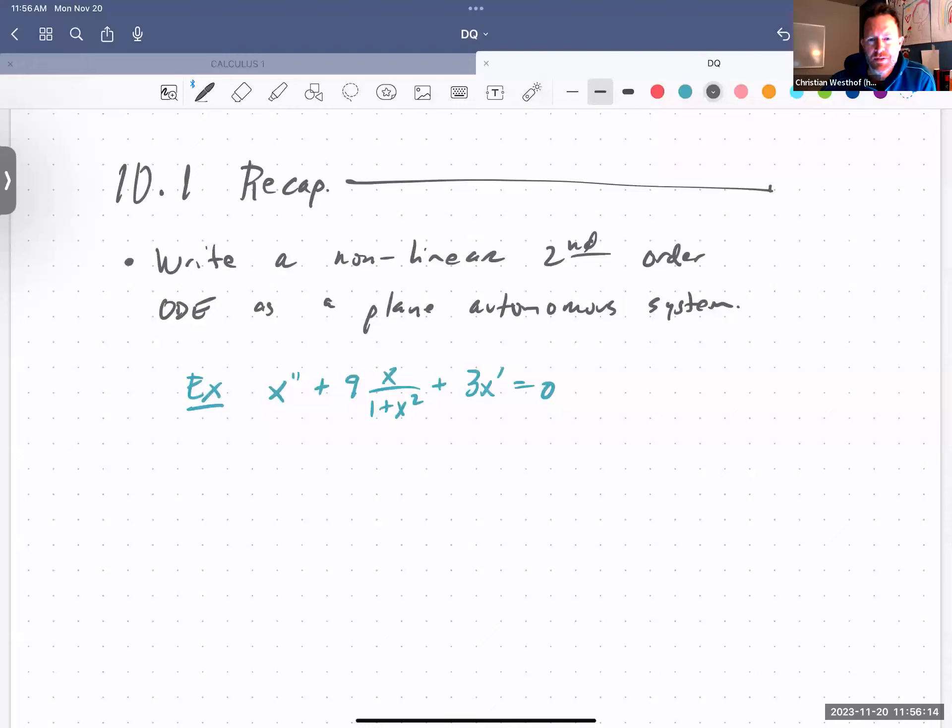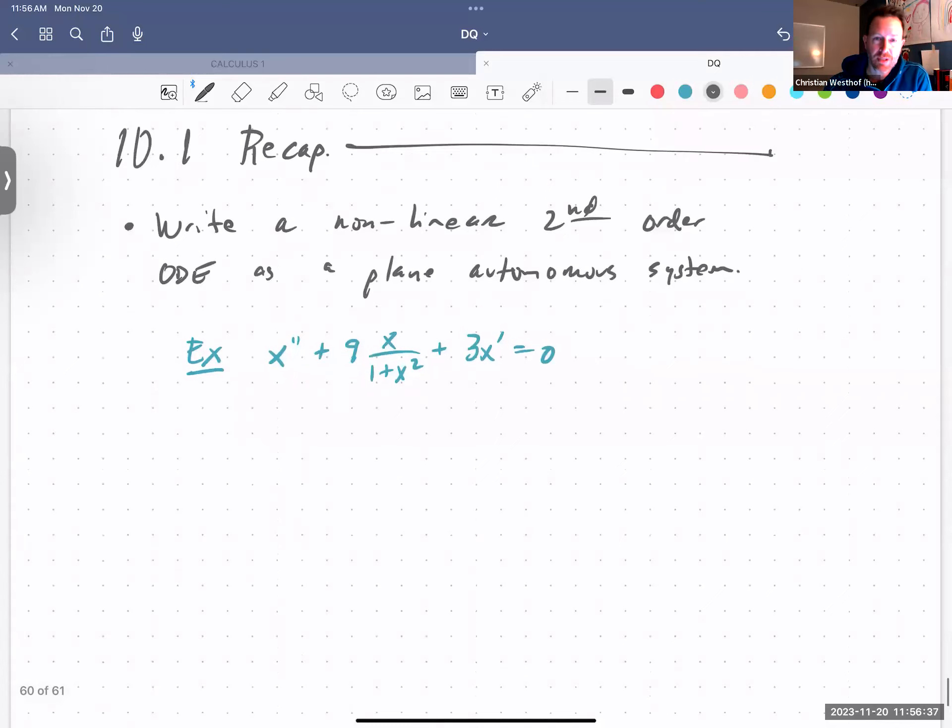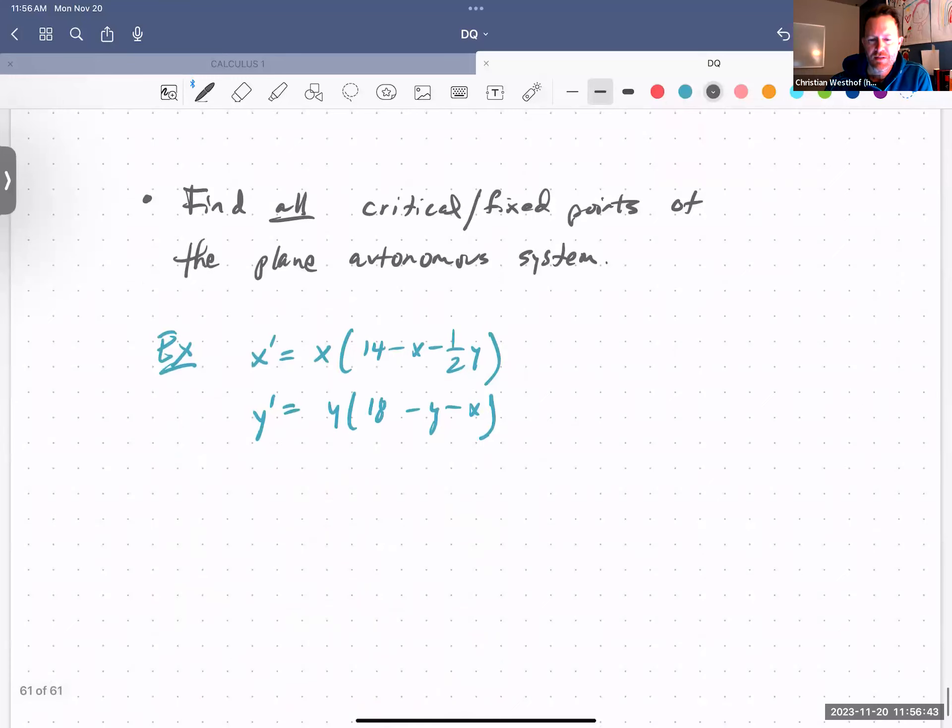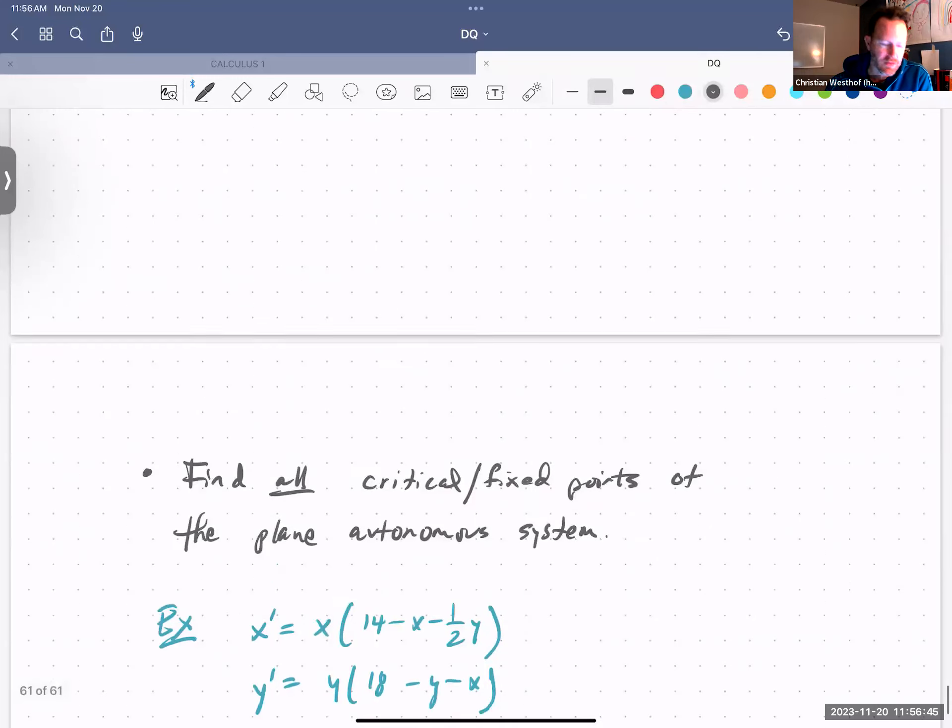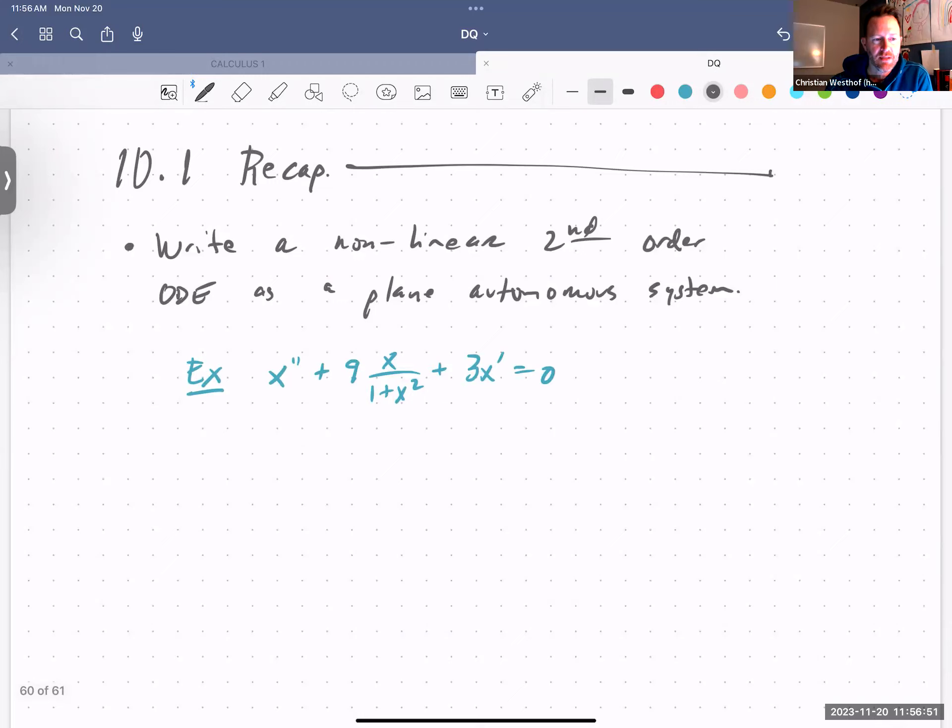Hi everybody, it's Monday and this is a quick recap video of 10.1. I think I'll post another one for 10.2 on classifying the equilibrium points. So this will be a quick video on the things we did in 10.1: writing a non-linear second-order ordinary differential equation as a plane autonomous system, and then also finding critical points for a plane autonomous system. Both of these examples are examples that we've looked at or are similar to examples we've looked at in class and are currently posted in OneDrive.